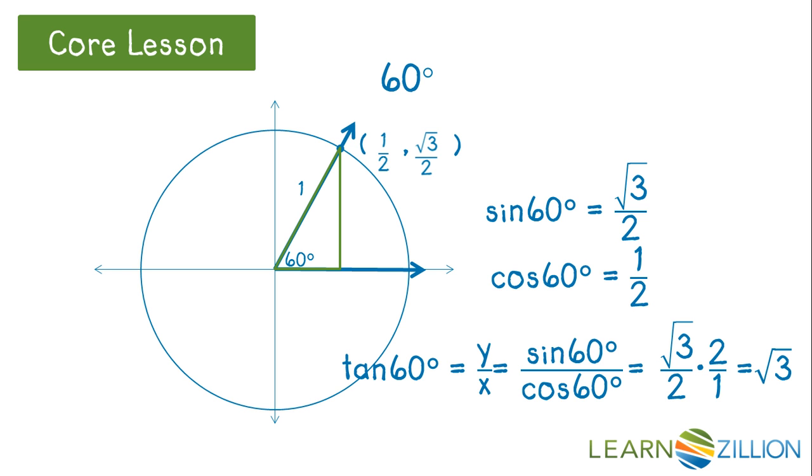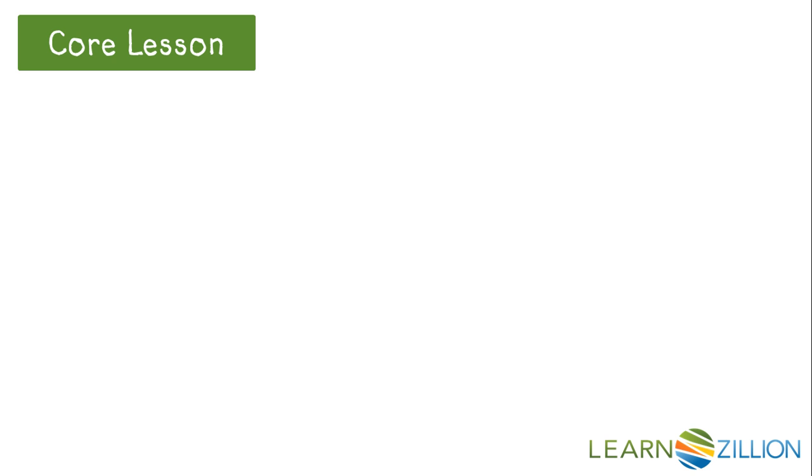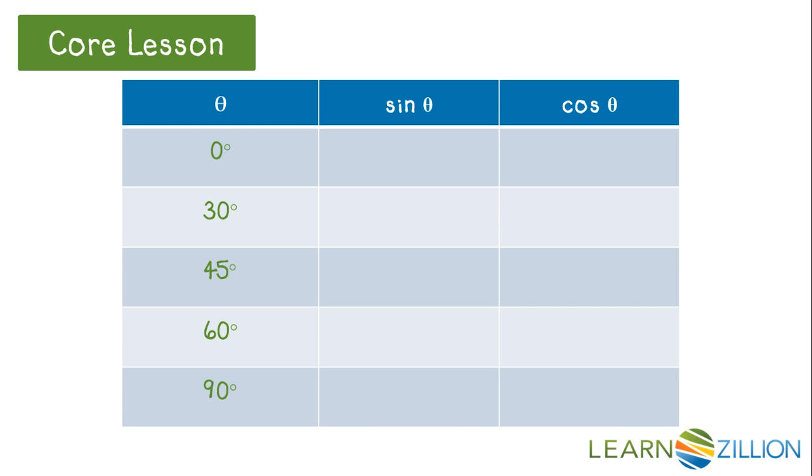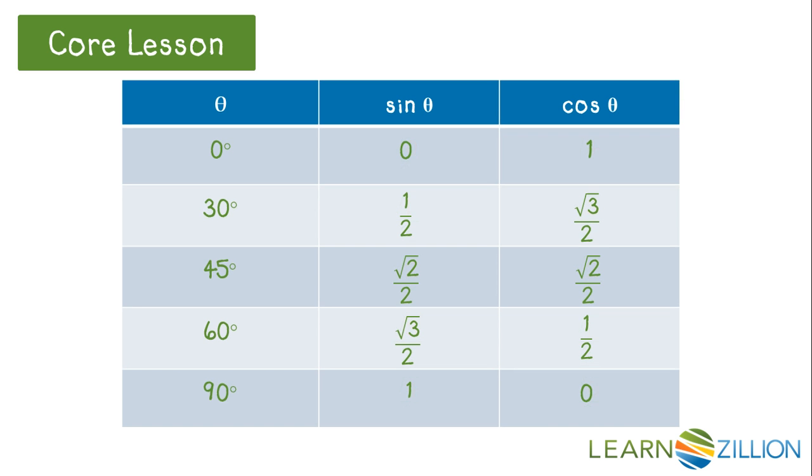Would you like an easy way to remember the sine and cosine of all these angles? This chart may help. First, list all of the special angles in the first quadrant, including 0 and 90 degrees. Next, fill in fractions that have a radical in the numerator and 2 for the denominator. Now we'll fill in the blanks, starting at the sine of 0 degrees with 0, and then go down the column, 1, 2, 3, 4, and up the next column, 0, 1, 2, 3, 4. Then, simplify, and you've got them all.